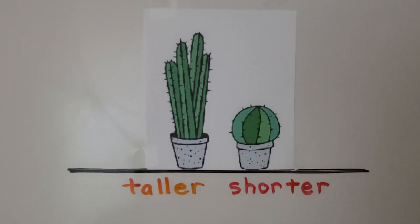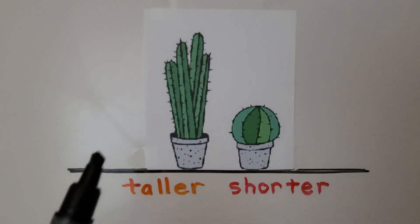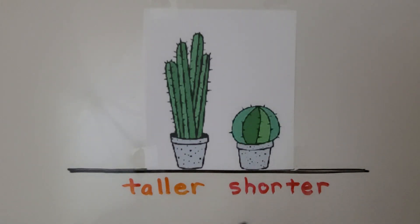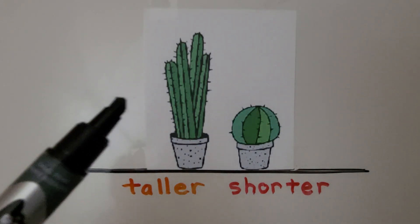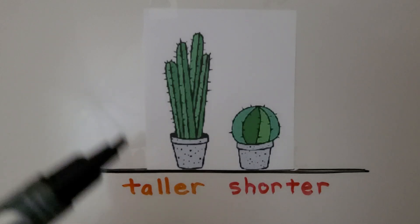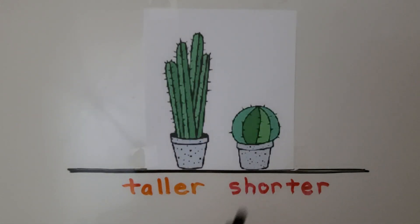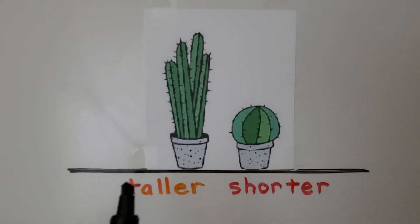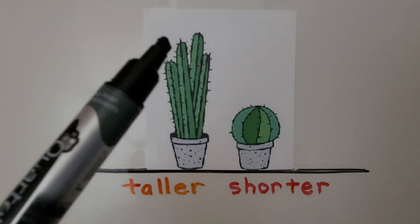Here we see two cactus plants. This cactus is taller than this cactus. This cactus has a height that is greater than this cactus. The height of an object tells us how tall it is, and we line them up on the same line on the bottom so they start at the same place. The one that goes higher is the taller one.